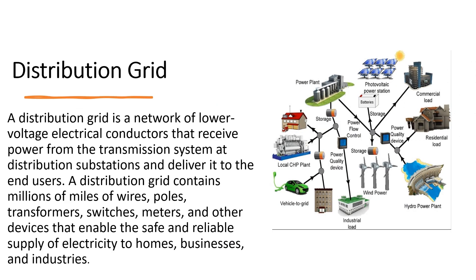At the end there is a distribution grid, which is a network of lower voltage electrical conductors that receive power from the transmission system at distribution substations and deliver it to the end users. A distribution grid contains millions of miles of wires, poles, transformers, switches, meters, and other devices that enable the safe and reliable supply of electricity to homes, businesses, and industries.